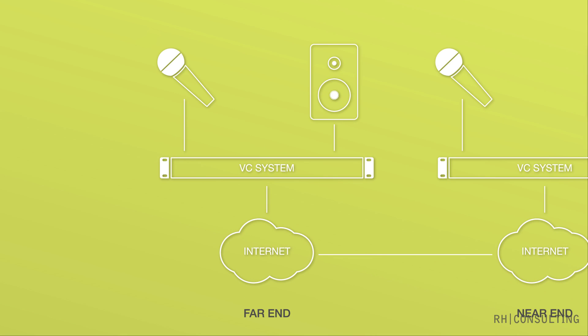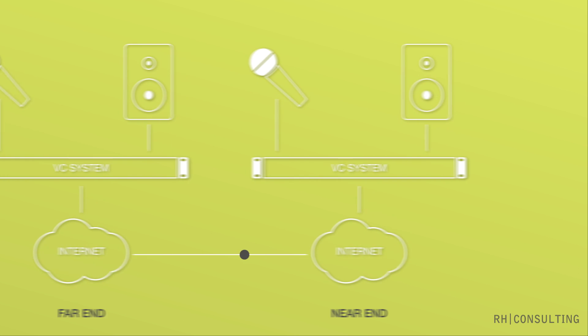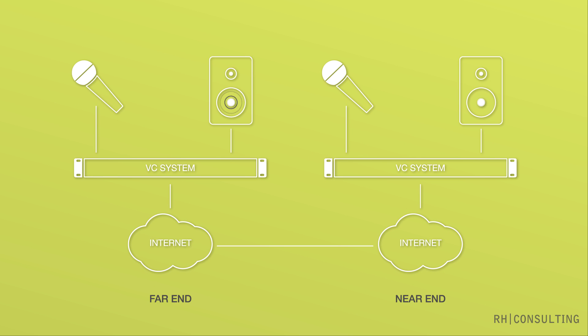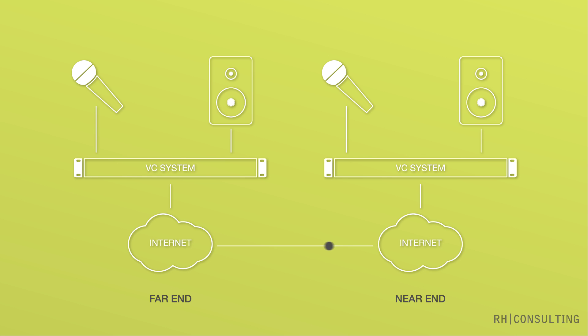Now this seems straightforward enough so far, except if we did just that it would sound awful. Why? Well let's look at the journey the audio is taking. When the audio from the far end comes out of the loudspeakers in your room, you hear it through your ears which is fine, but that sound also gets picked up by your room microphones. And this sound in turn gets sent back to the far end and comes out of their loudspeakers and goes into their microphones and back again.